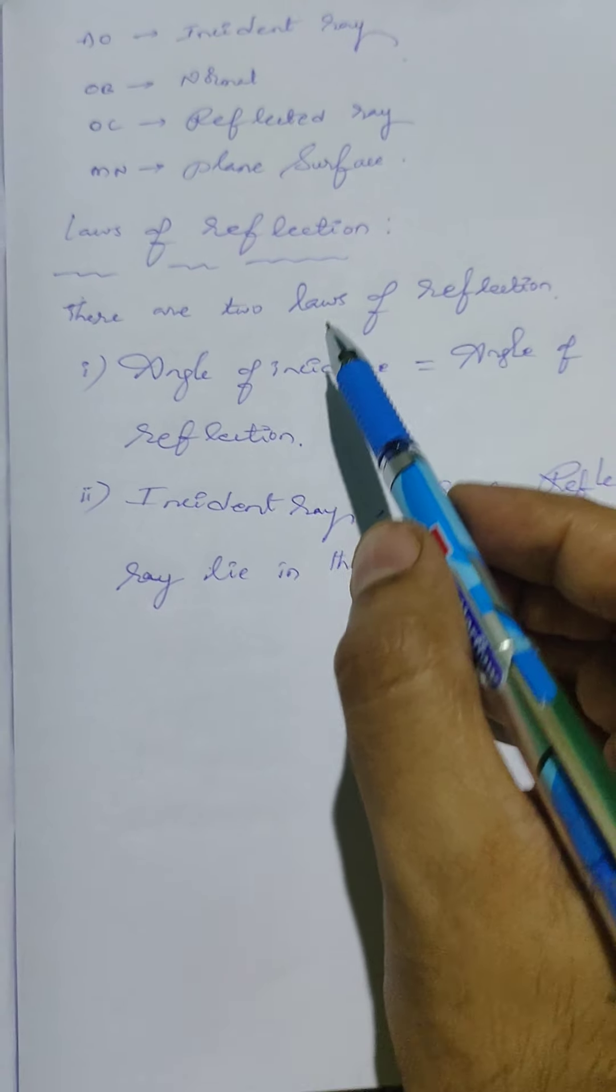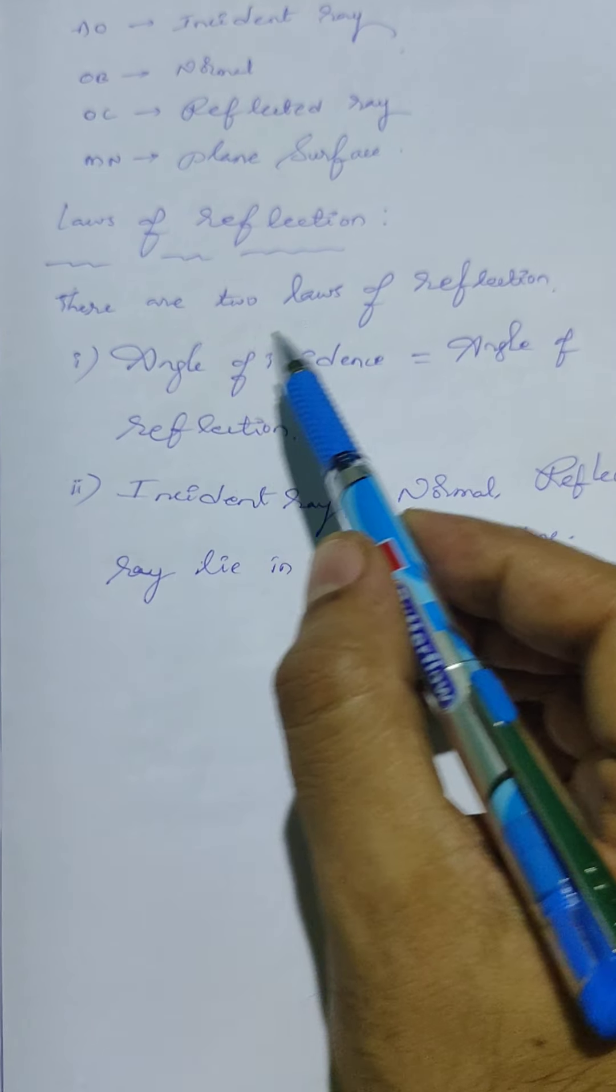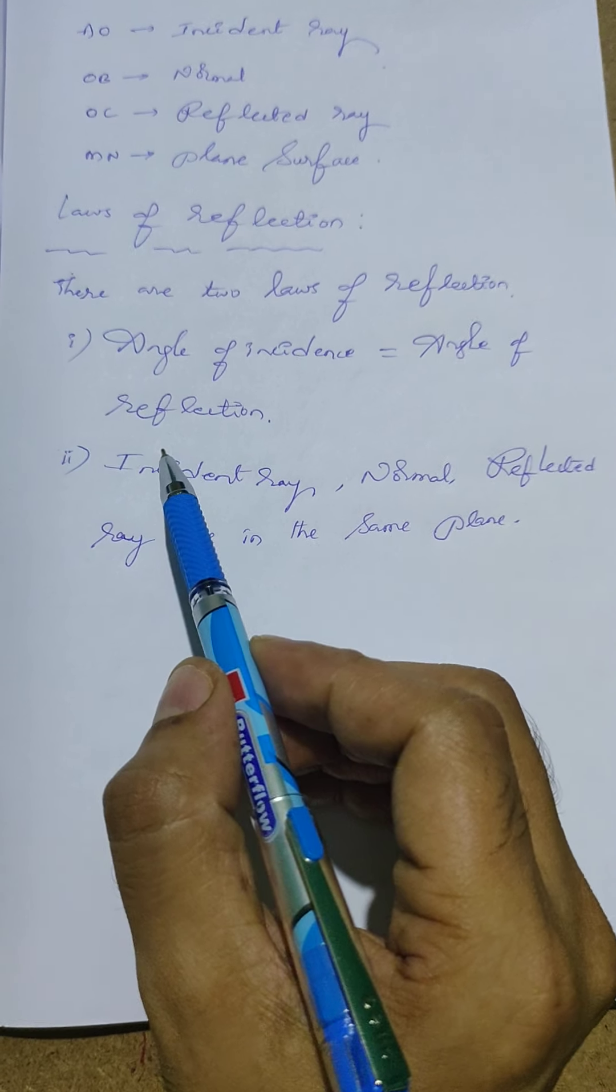Now, laws of reflection. So how many laws of reflections? Two laws of reflections are there.